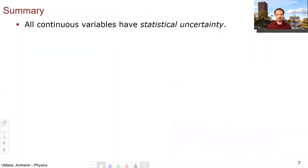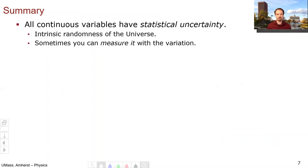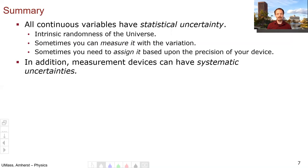So in summary, all continuous variables have some degree of statistical uncertainty. This is due to the intrinsic randomness of the universe and the actual philosophical unknowability of the exact true value of a continuous variable. Sometimes you can measure this uncertainty by looking at the variation within your measurements, but sometimes your measurement device lacks precision and you just need to assign your statistical uncertainty based upon the precision of your device and your intuition and understanding of how things work.